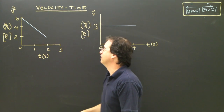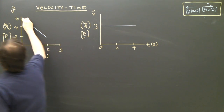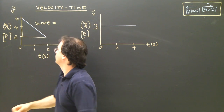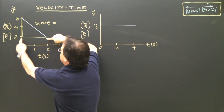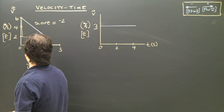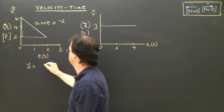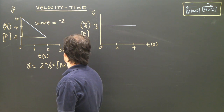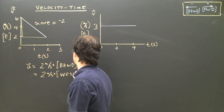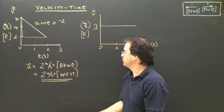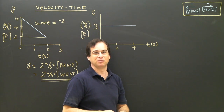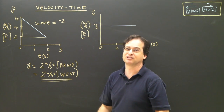So this is an object moving forward and slowing down. Let's look at the acceleration, which is the slope. Taking the slope: 6 minus 2 is 4, divided by 2 minus 0, which is 2 — and it's a negative slope, so it ends up being negative 2. The acceleration of this object is negative 2 meters per second squared, which is 2 meters per second squared backward — or west, since east is forward. That confirms what we found: accelerating west while moving east means slowing down.